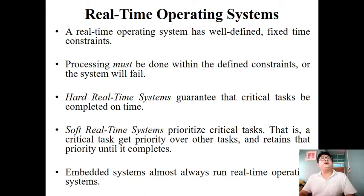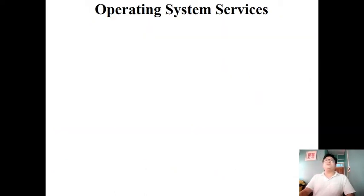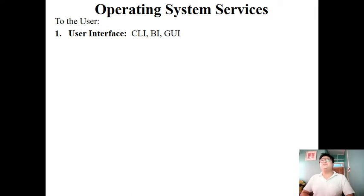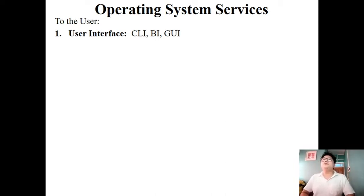Now we will talk about operating system services. There are services that the operating system provides to the user and services it provides to the system itself. The first service provided to the user is the user interface (UI). Each operating system — such as Mac, Windows, or Linux — provides a UI to the user. The common UI classifications are CLI, BI, and GUI.